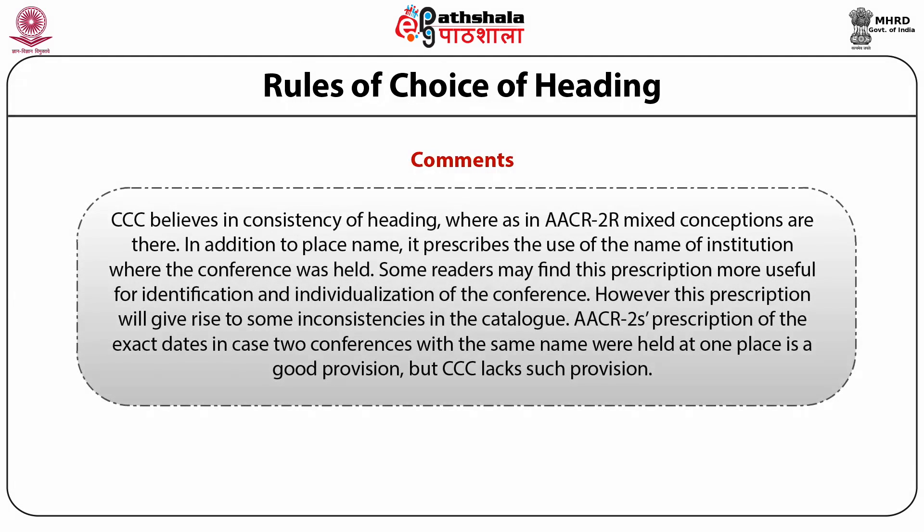Comments: CCC believes in consistency of heading, whereas AACR2R has mixed conceptions — in addition to place name, it prescribes use of the institution name where the conference was held, which may help some readers identify conferences but introduces inconsistency in catalogs. AACR2R's prescription of the exact date when two conferences with the same name were held at one place is a good provision, but CCC lacks such a provision.